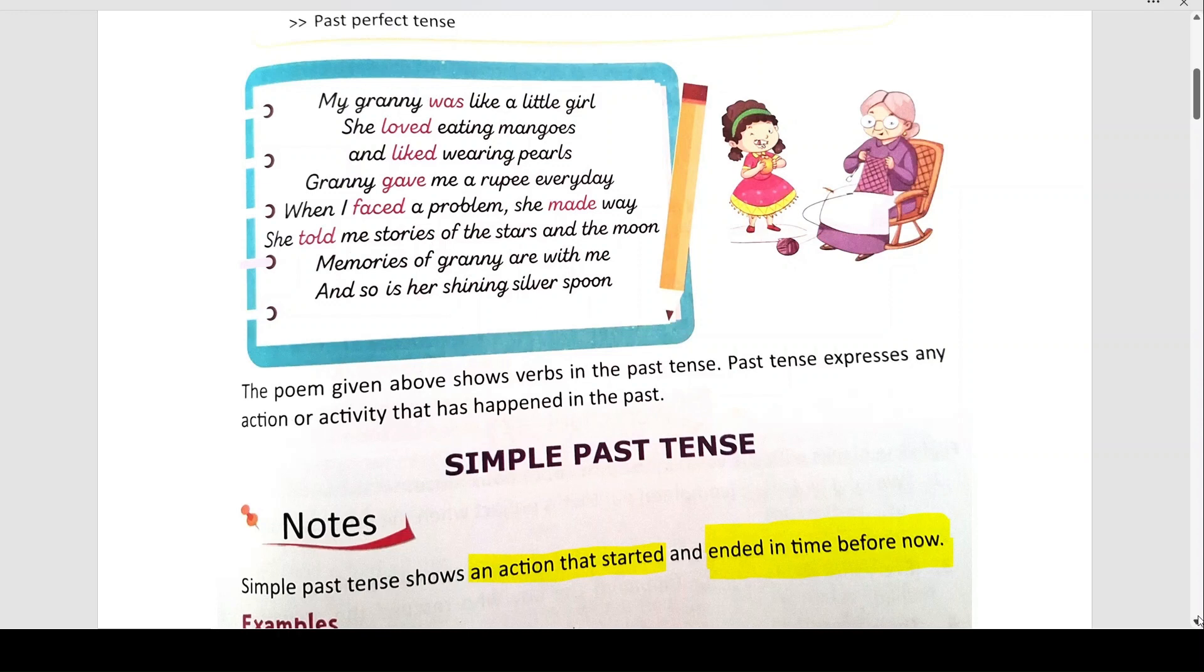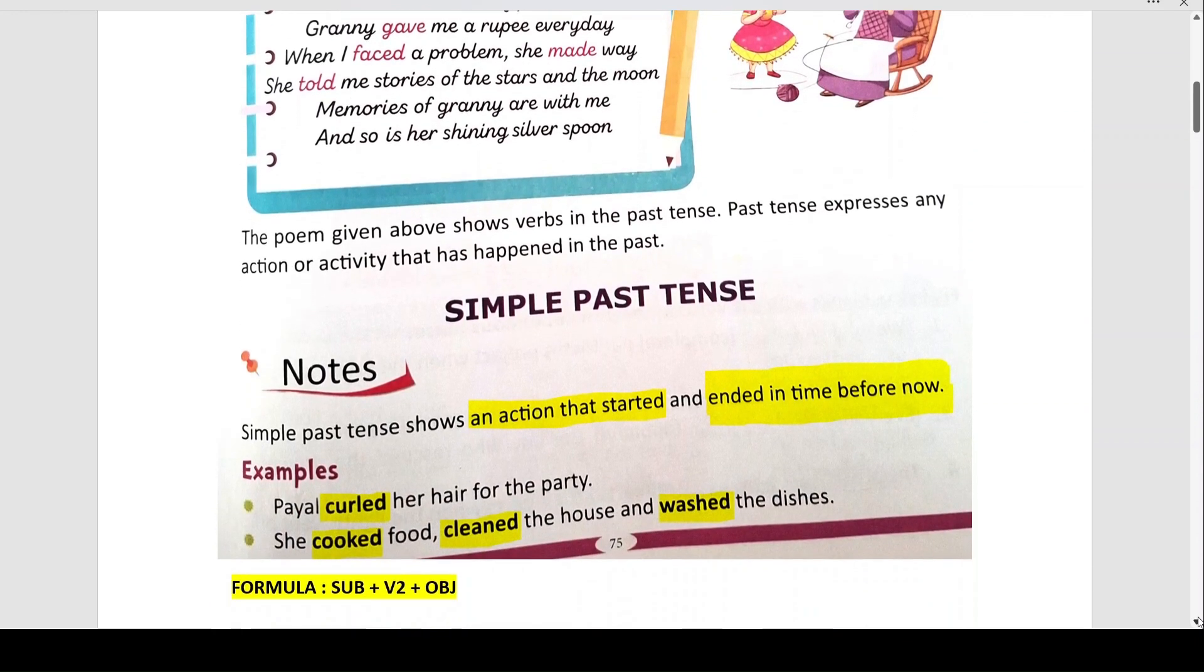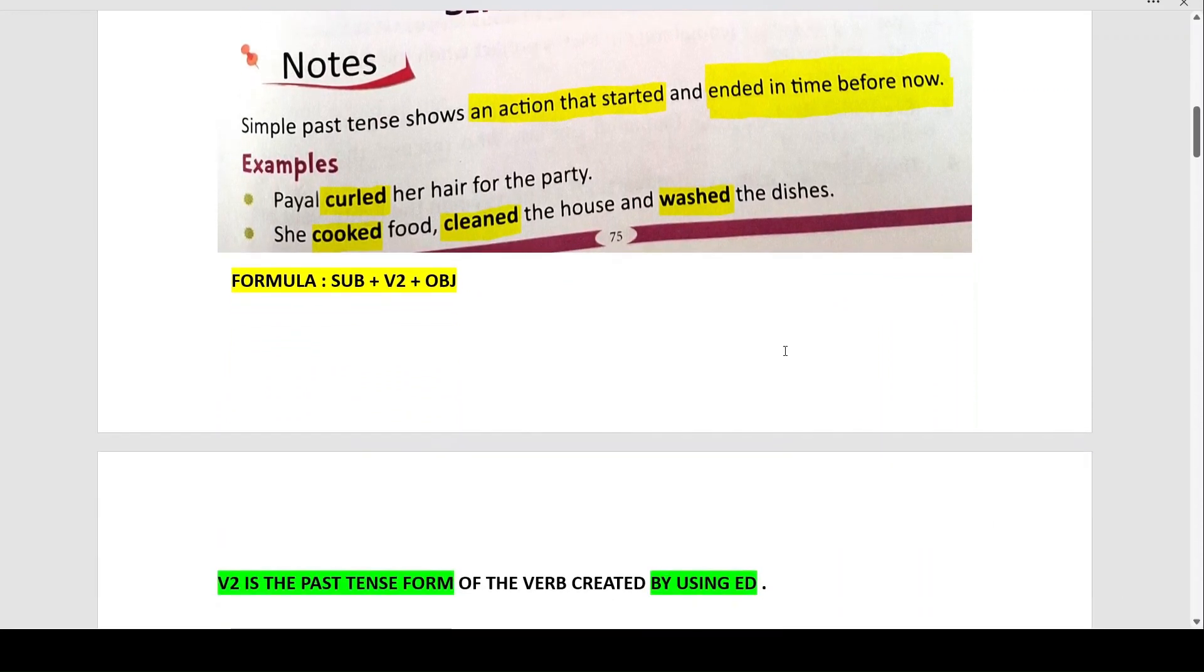The poem given above shows verbs in the past tense. Past tense expresses any action or activity that has happened in the past. Now what is simple past tense? Simple past tense shows an action that started and ended in time before now. It started and finished in the past.